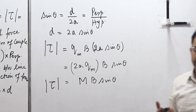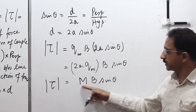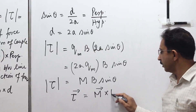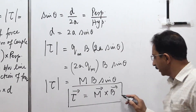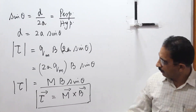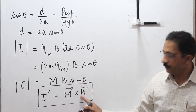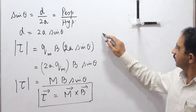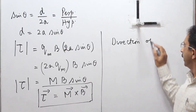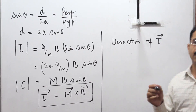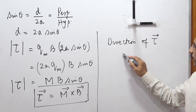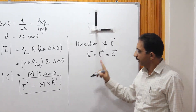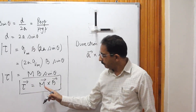Torque is a vector quantity. In vector form, the torque vector is given by the cross product of M and B: τ = M × B. This is the vector definition of torque. The direction of torque is determined by the rules of vector cross product — it is perpendicular to the plane formed by M and B.